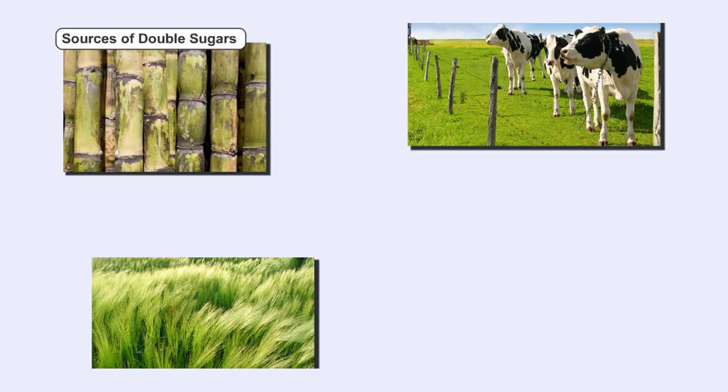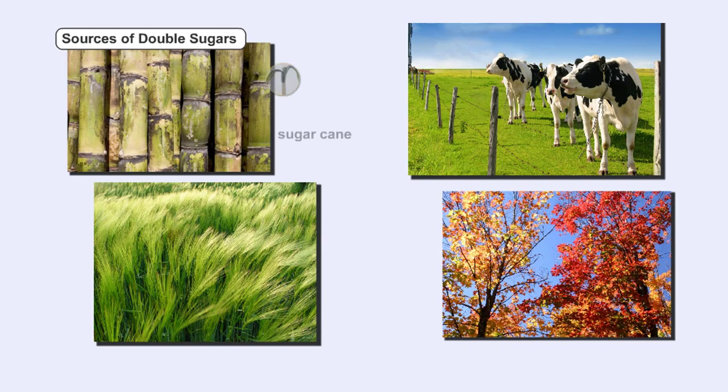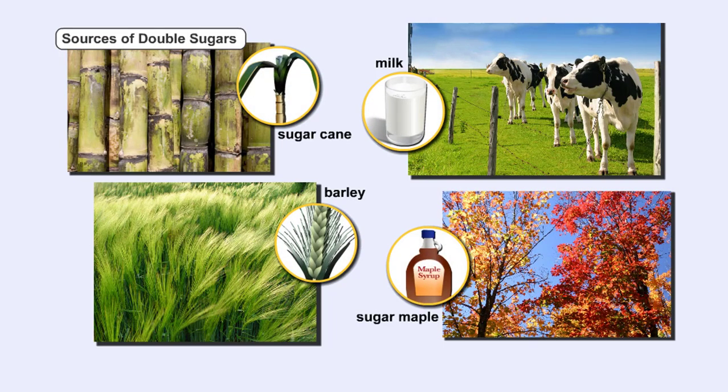As we have seen, monosaccharides are a single chain or ring of a carbohydrate. For instance, glucose and fructose are monosaccharides.